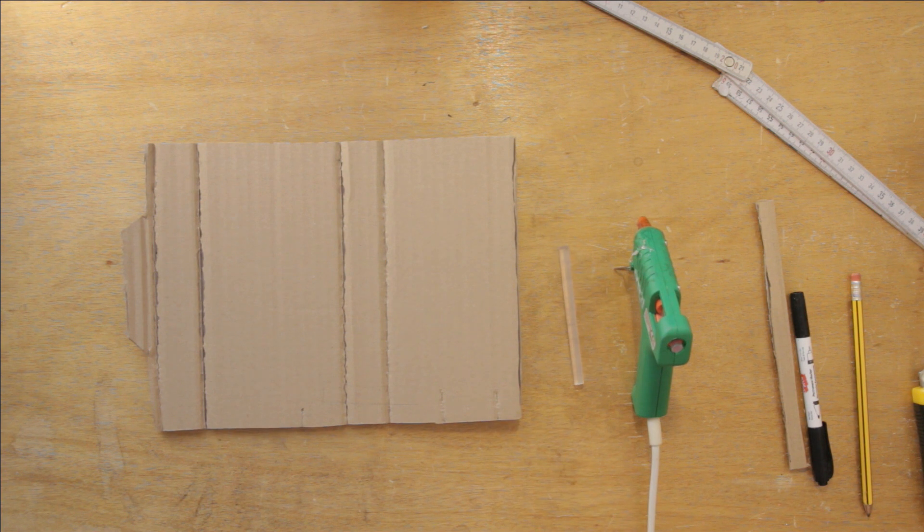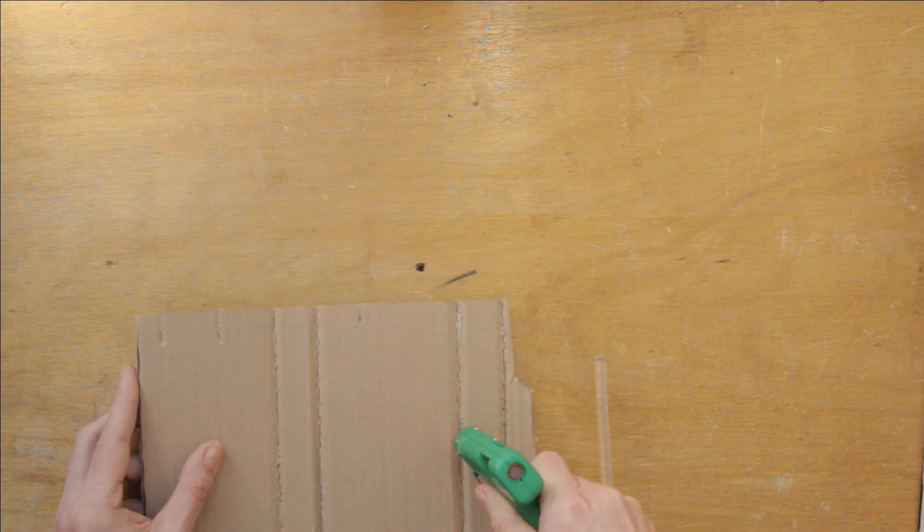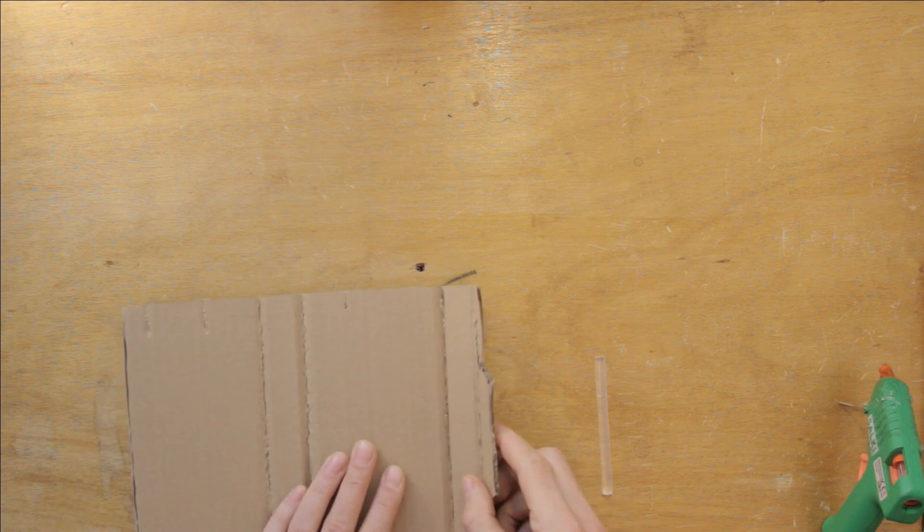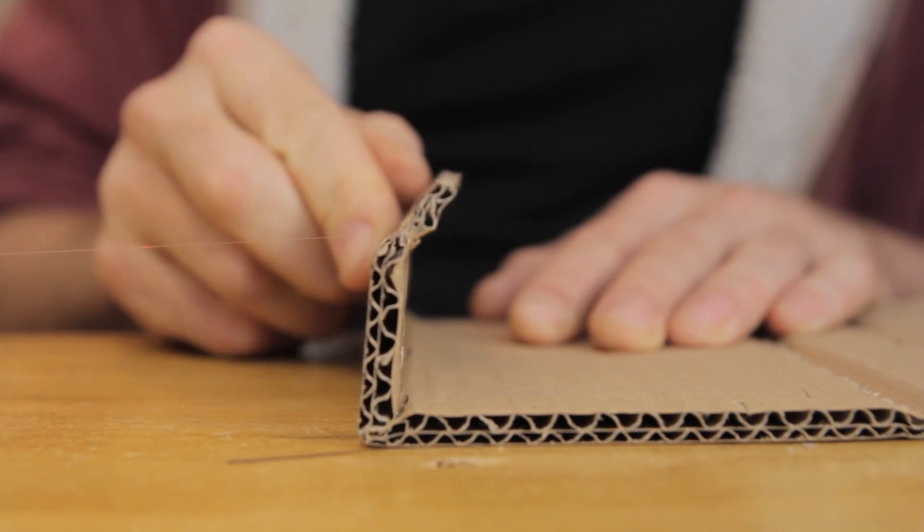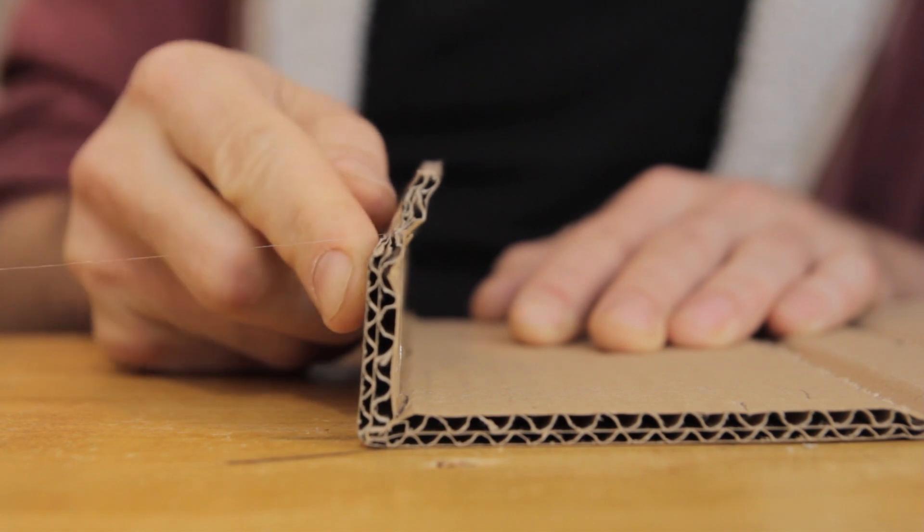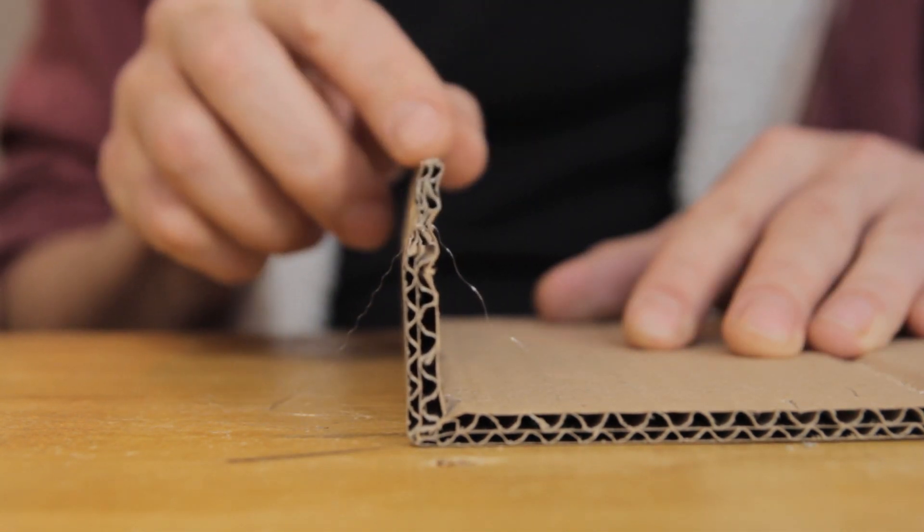I'm using my trusty glue gun which is fast and easy to use. To hold the bends in position I place three or four globs of glue along the inside of the bend. Then I make the bend and hold it in place while the glue sets. There. That seems solid enough.